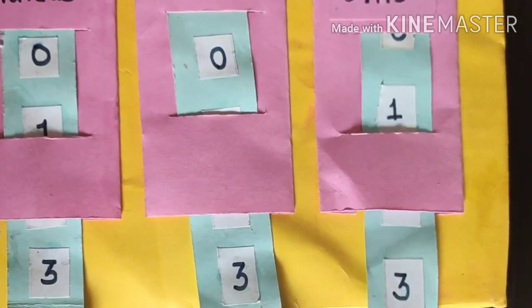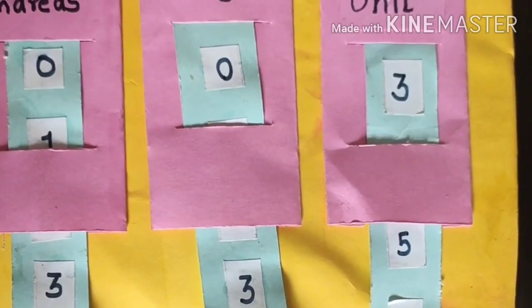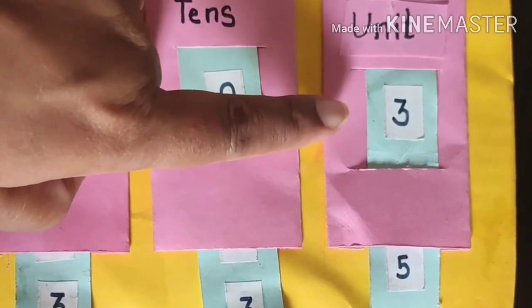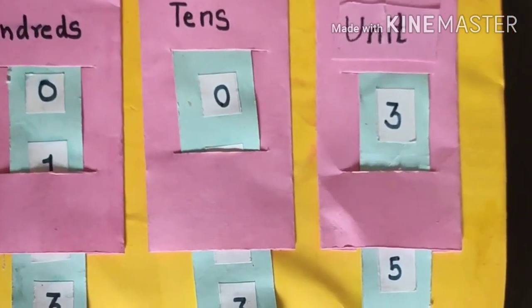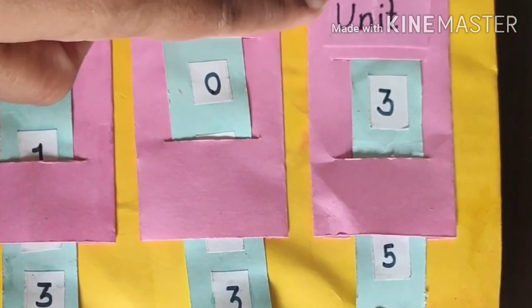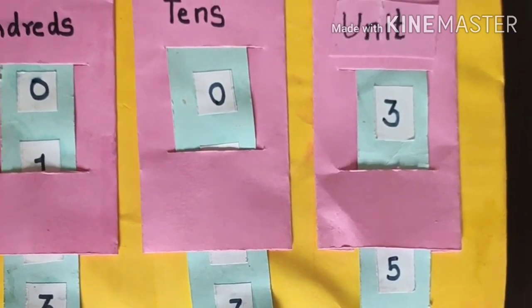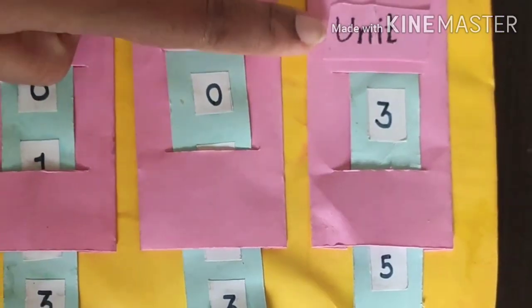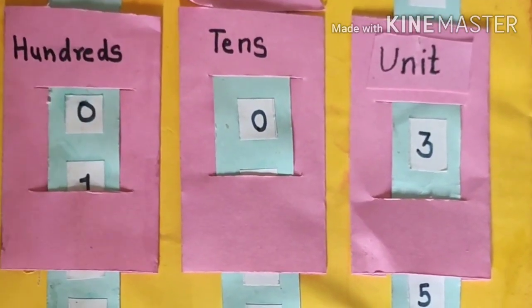Look, here comes one number. Which number is that? It's 3. And at which place is 3 written? 3 is written at units place.